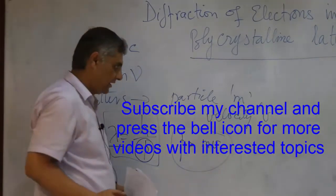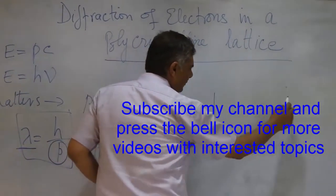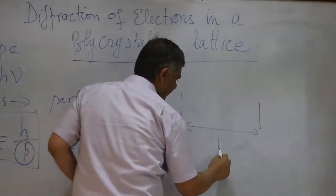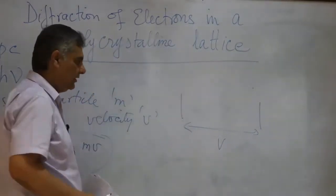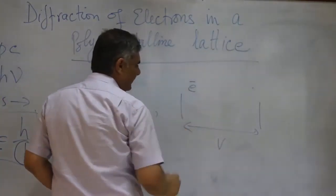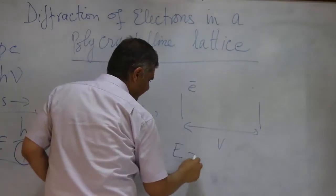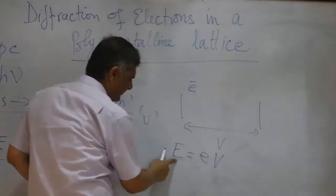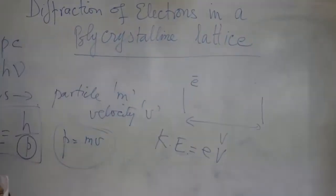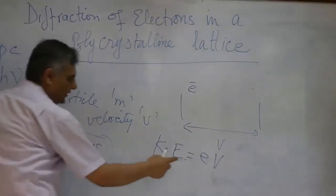In this simple experiment, we take two plates and apply a potential difference given by V. The energy gained by an electron of charge E is given by E equals EV, which is the kinetic energy.